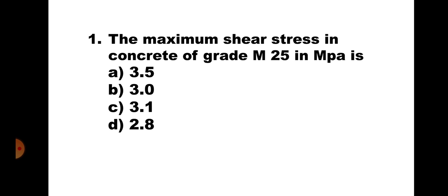The maximum shear stress in concrete of grade M25 in MPa is: A. 3.5, B. 3, C. 3.1, and D. 2.8. According to IS-456-2000, the shear stress in concrete is limited to a maximum value so as to avoid compression failure. From IS-456, the maximum shear stress in concrete of grade M25 is 3.1 MPa. Hence, the correct answer is C. 3.1.